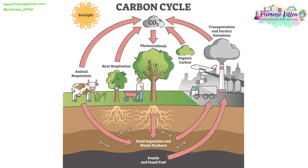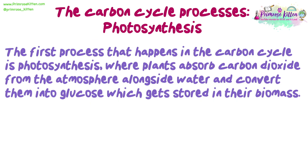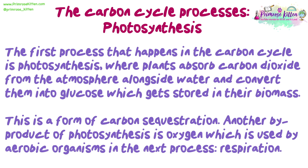We're now going to look at the processes that happen in the carbon cycle, shown by arrows on the diagram as they represent the way in which different forms of carbon can move between reservoirs. The first process is photosynthesis, where plants absorb carbon dioxide from the atmosphere alongside water and convert them into glucose, which gets stored in their biomass. This is a form of carbon sequestration. Another by-product of photosynthesis is oxygen, which is used by aerobic organisms in the next process: respiration.